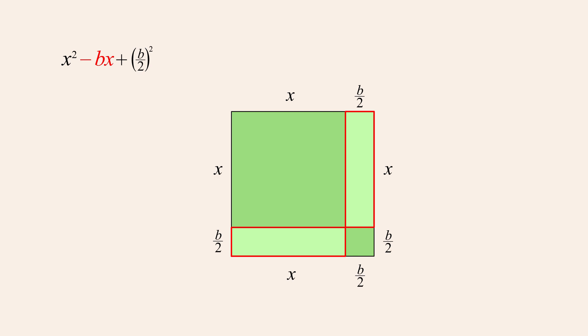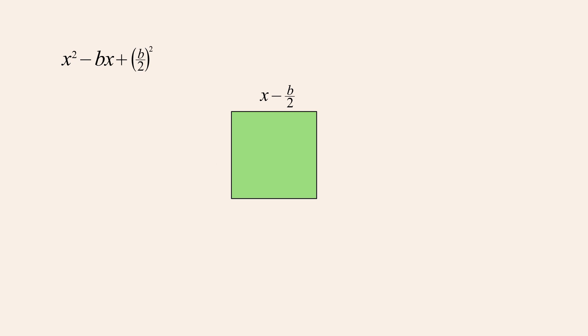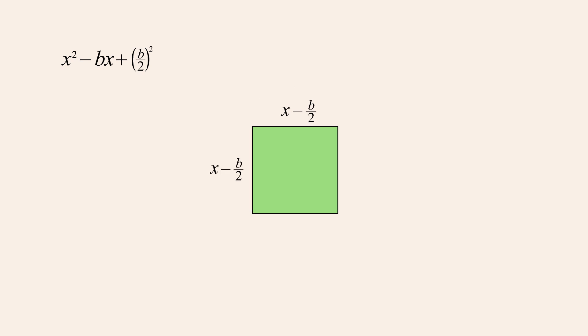So let's first subtract the area of the rectangle on the right from the x-squared box. This leaves a rectangle of height x and width x minus b over two. Next, let's move the small square with a side length of b over two into the space above the lower rectangle, and subtract the lower rectangle from the two shapes above it. This leaves a square with a height and width of x minus b over two. The area of this square created from the sum of these shapes represents the quadratic expression x-squared minus bx plus b over two-squared.